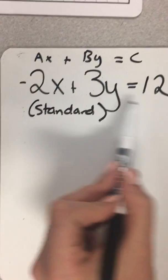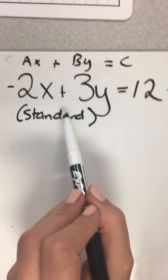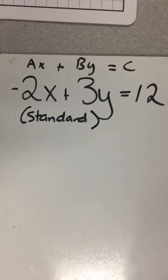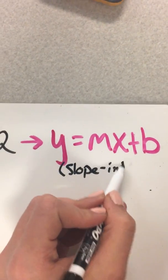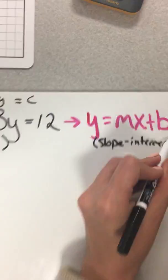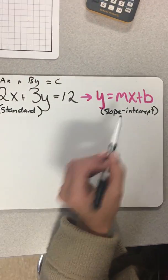So here's our equation in standard form. And I'm going to graph this. We have to turn it into slope-intercept form. So what I just showed you. So I'm going to show you how to turn it into slope-intercept form.